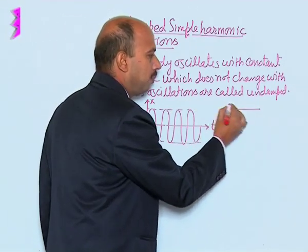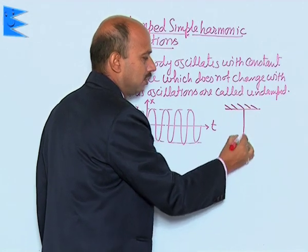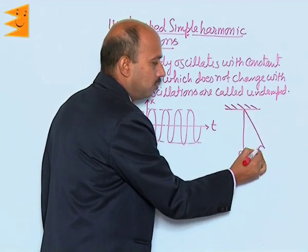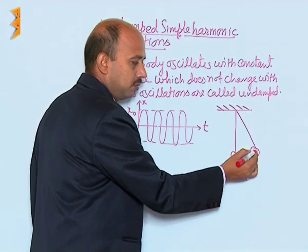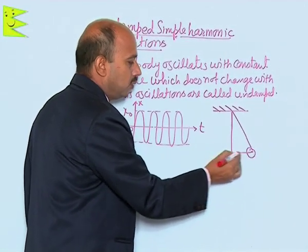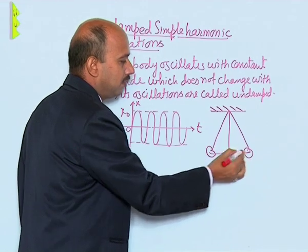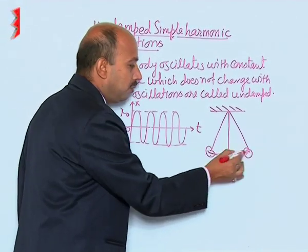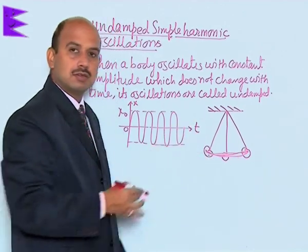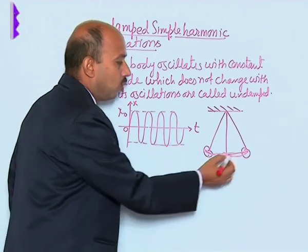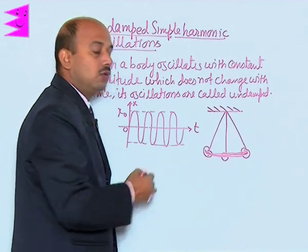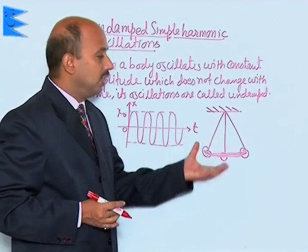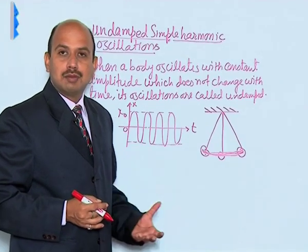Suppose you have a simple pendulum suspended here, and this is the mean position. If you take it to one side initially and make it free, it will oscillate between those two points. If this pendulum keeps on oscillating forever with constant amplitude — amplitude does not change with time — then we can say the oscillation of the simple pendulum is undamped.